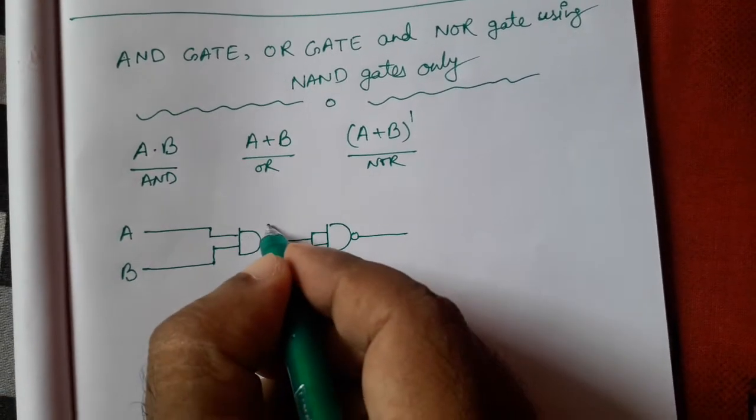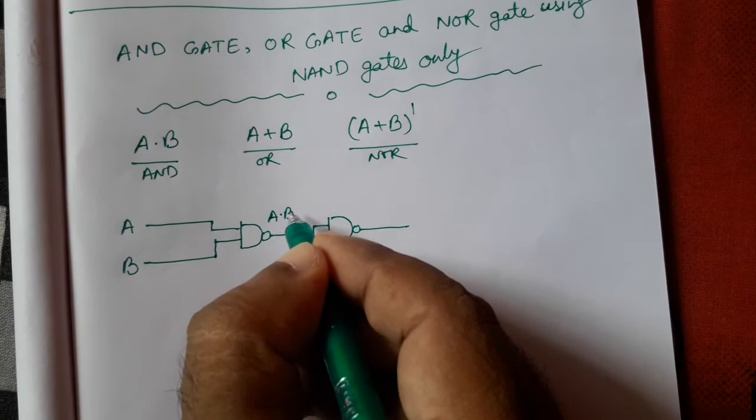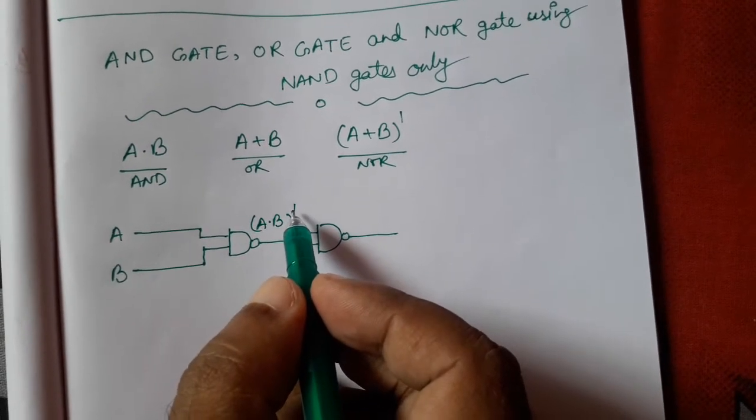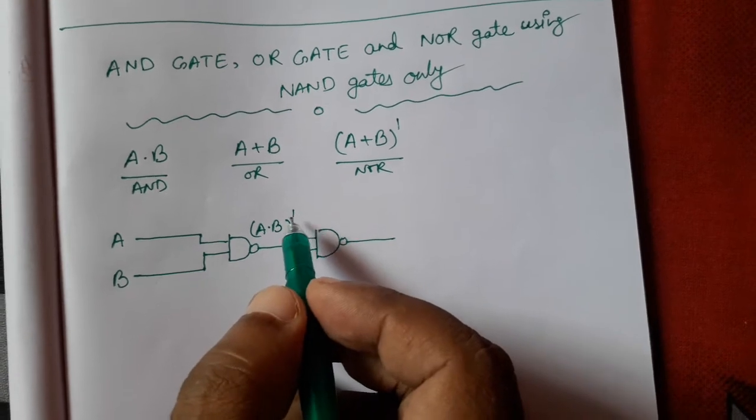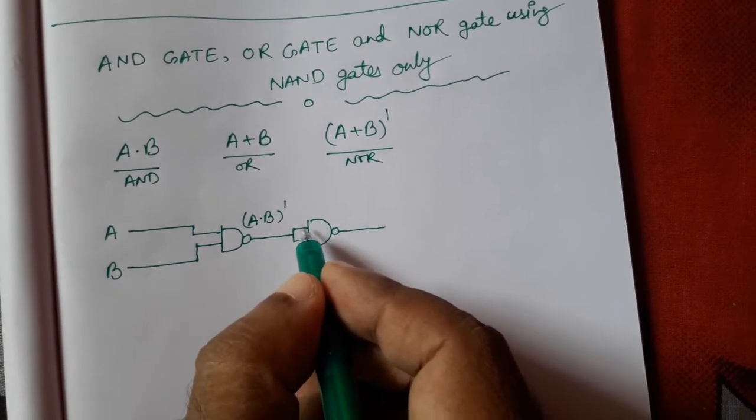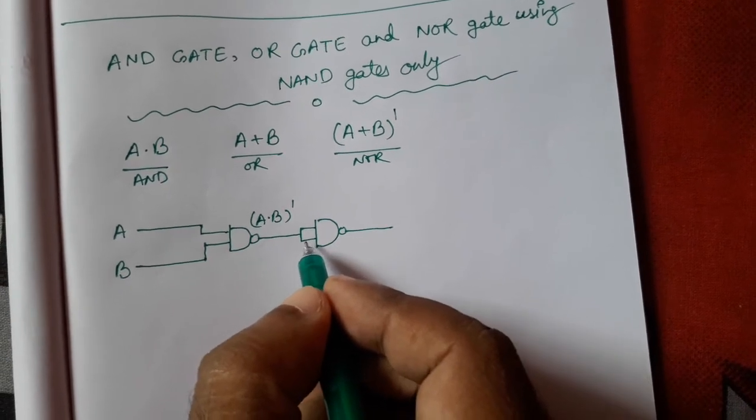So when we are adding one NAND gate, we are getting A into B whole complement. That means if we can remove this whole complement, we will get A into B. So how we will remove? Here we are taking two inputs. This is also A into B, this is also A into B.